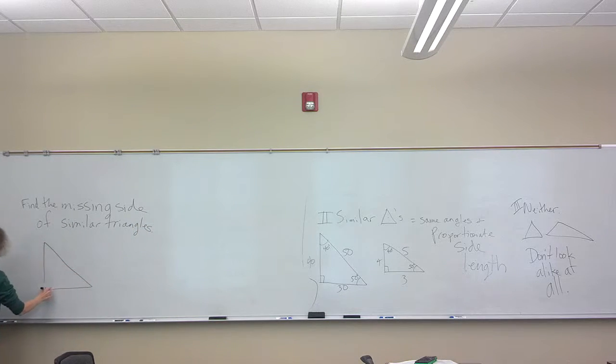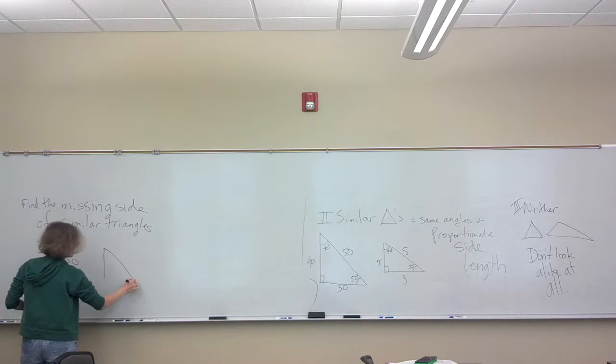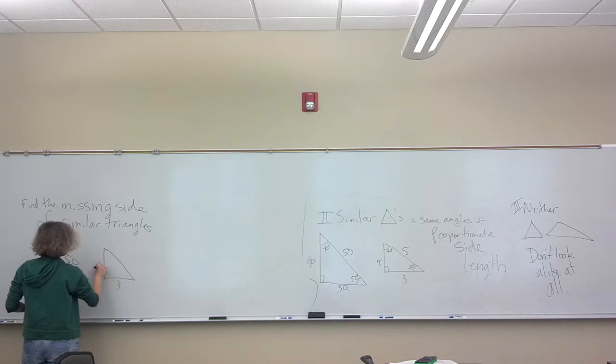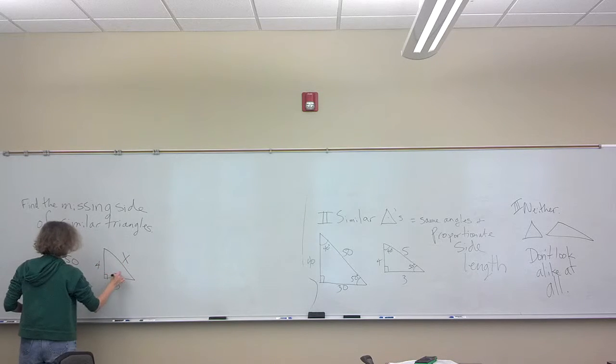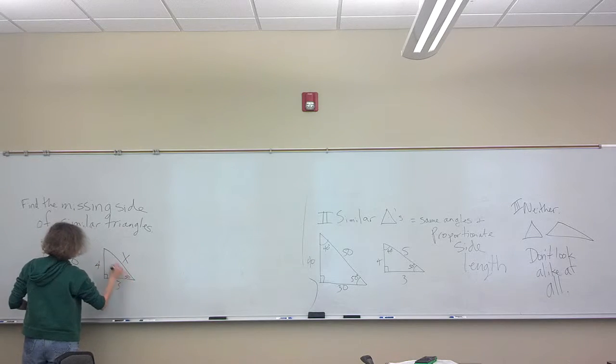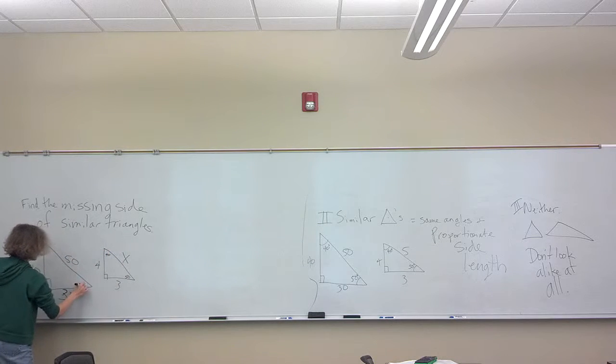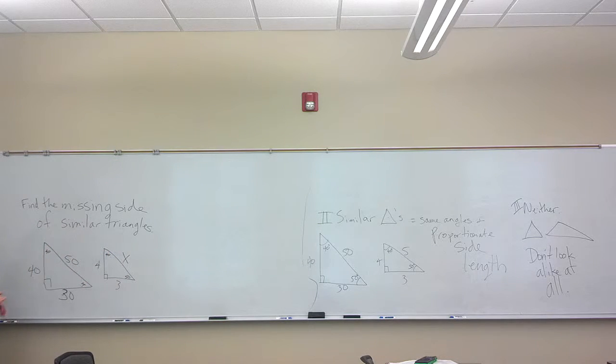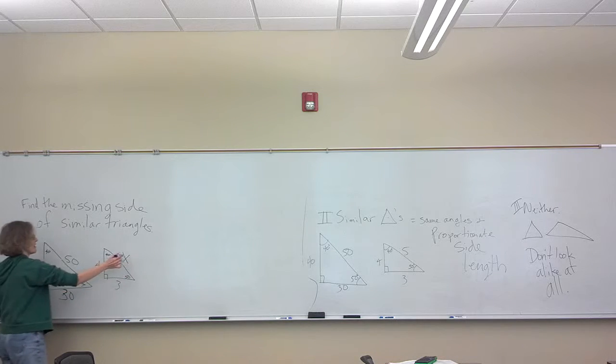So we're going to take our example over there. I'll redraw it. It's 30, 40, 50. I'm going to have a little one. So these are the same triangles as we have over there, but now we're missing a side.